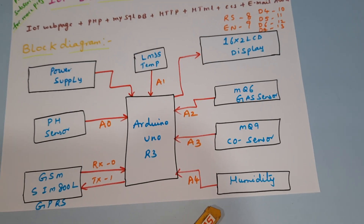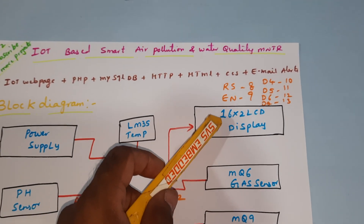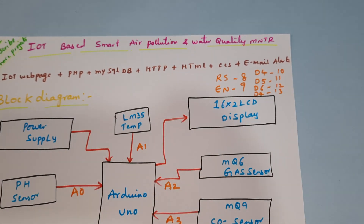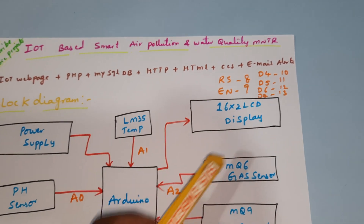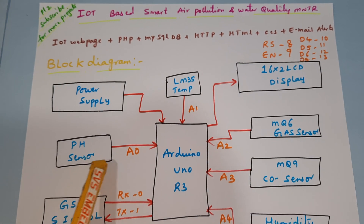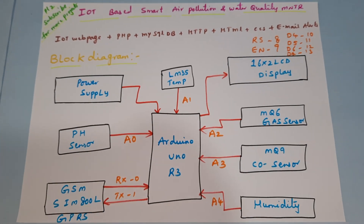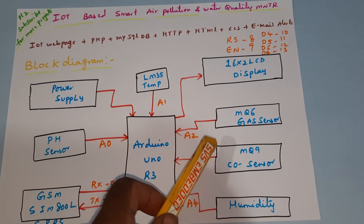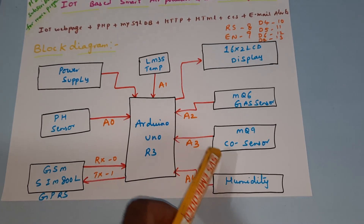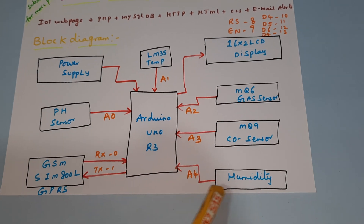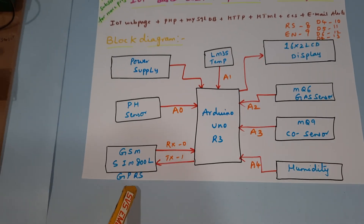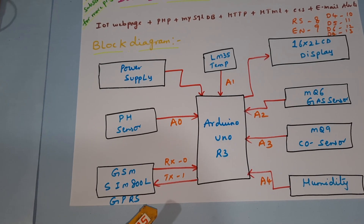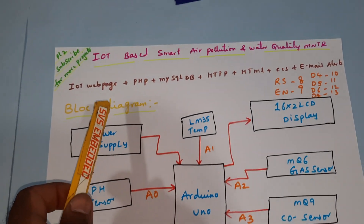We also use a humidity sensor, a 16x2 LCD display with RS, and pins D4, D5, D6, D7 on pins 8, 9, 10, 11, 12, 13. The temperature sensor is connected to analog A0, humidity sensor to A1, gas sensor to A2, MQ9 to A3, and humidity sensor to A4. We are using a GPRS modem to get SMS alerts as well as email alerts through a web page.